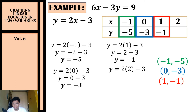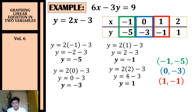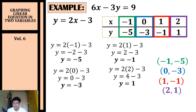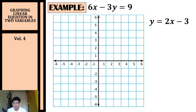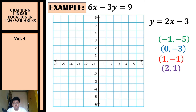Substituting x equals two: y equals two times two minus three, which simplifies to y equals one — giving us our fourth coordinate (2, 1). Now that we have all our coordinates, it's time to graph them in the rectangular coordinate system.